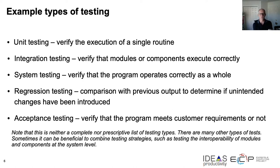There are also a couple of other different strategies. Regression testing is used to check that changes introduced into the code have not made any unintended changes to the program behavior — you want to check that the program still works the way it's supposed to. Acceptance testing, on the other hand, is similar to system testing in that it checks the program as a whole, but instead of checking against specifications, it's used to ensure that the program meets the requirements of the customer.